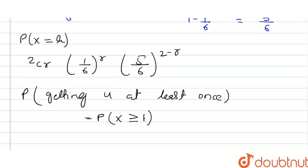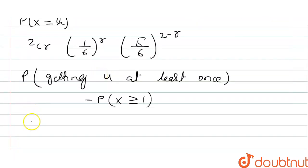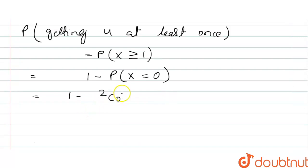Now we have to put the values. That is, 1 minus p of x equal to 0. Then, 1 minus 2 c 0, 1 by 6 to the power 0, 5 by 6 to the power 2 minus 0.